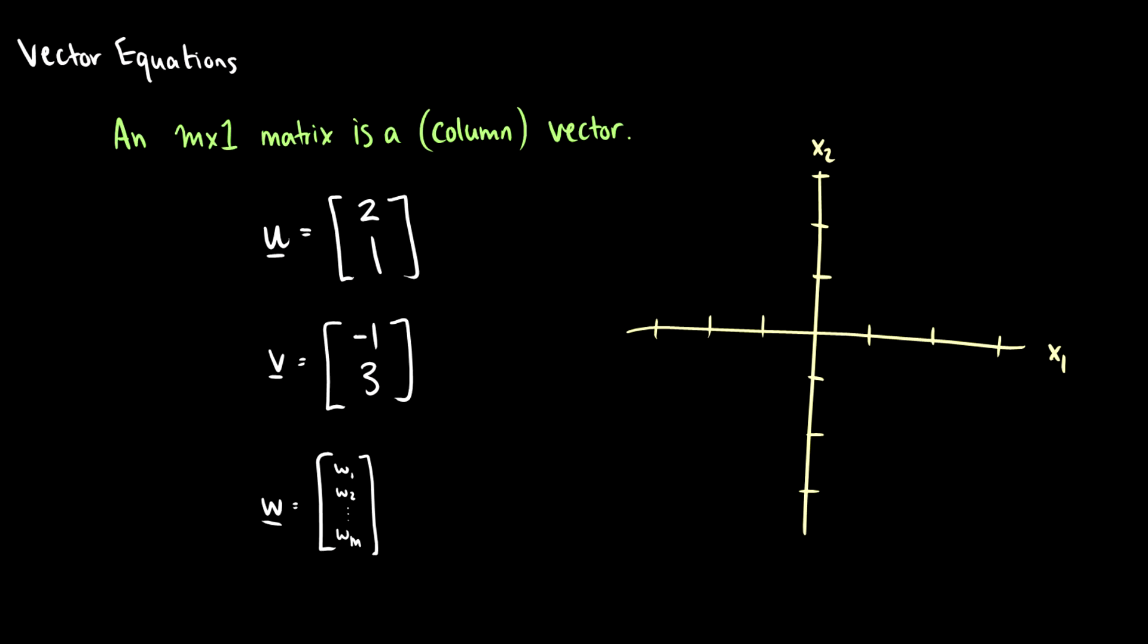In this video we're going to talk about vector equations and more specifically adding and multiplying these vectors. So how do we represent a vector and what is a vector? Well first of all we represent vectors with m by 1 matrices. So these are column vectors.